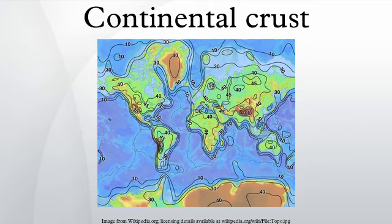Continental crust is produced and destroyed mostly by plate tectonic processes, especially at convergent plate boundaries. Additionally, continental crustal material is transferred to oceanic crust by sedimentation. New material can be added to the continents by the partial melting of oceanic crust at subduction zones, causing the lighter material to rise as magma, forming volcanoes. Also, material can be accreted horizontally when volcanic island arcs, seamounts or similar structures collide with the side of the continent as a result of plate tectonic movements.